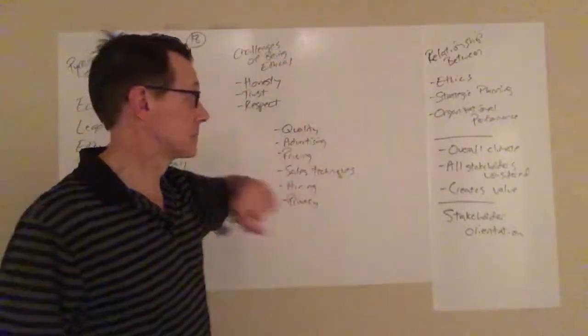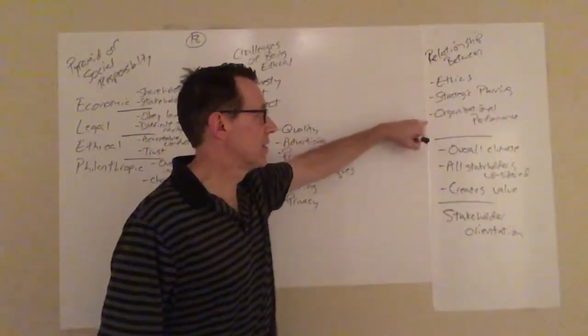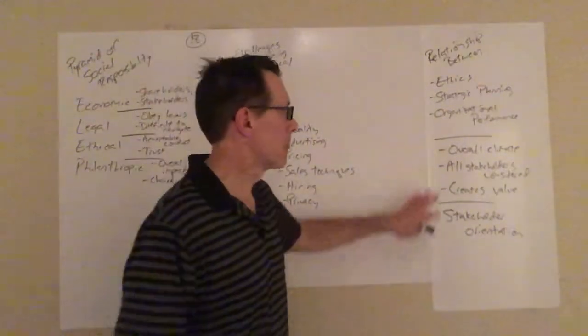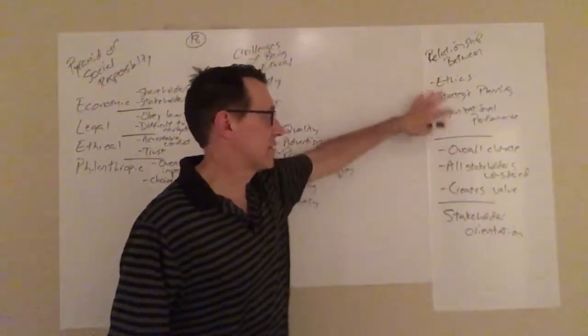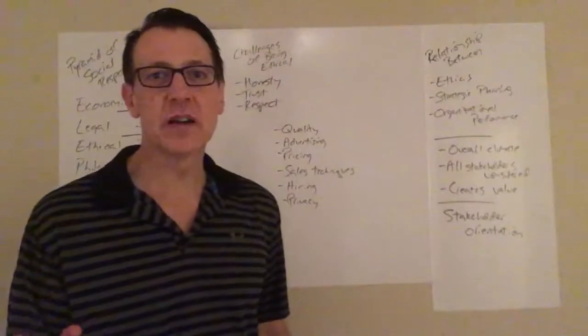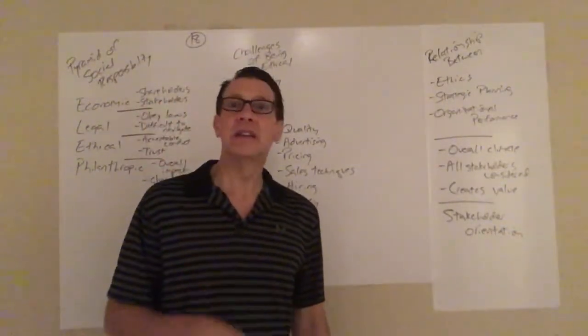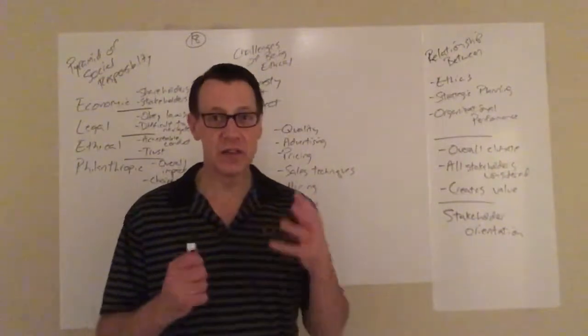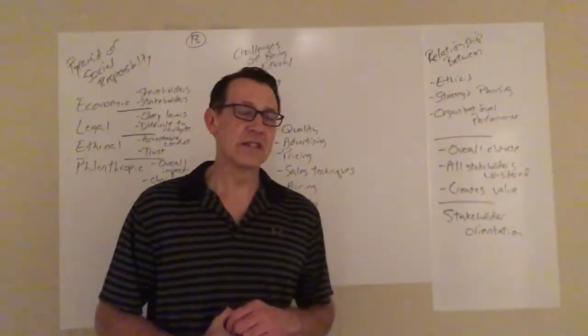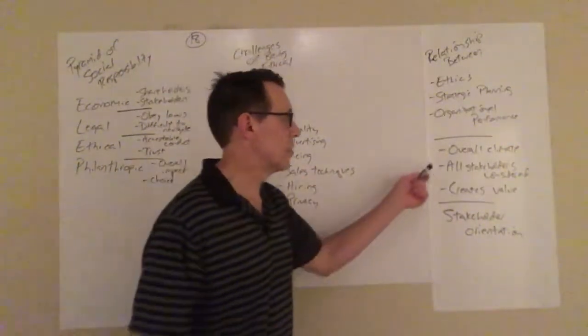And then over here on this side, what is the relationship between ethics, strategic planning, and organizational performance? What I want you to remember on this one is really this is ethics, strategic planning, or there's an overall climate in a company. And you always hear that, you know, the fish thinks from the head first. That's absolutely true. Your CEO is your chief culture officer. And as long as they're ethical, then everybody else needs to follow suit. And so it's an overall climate.